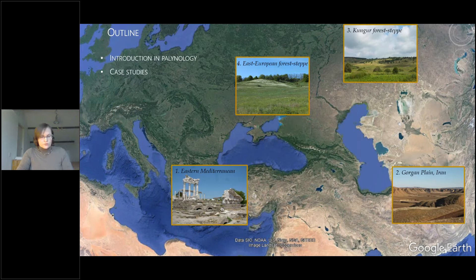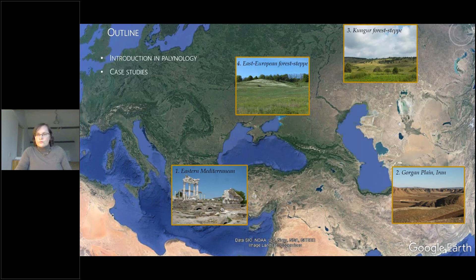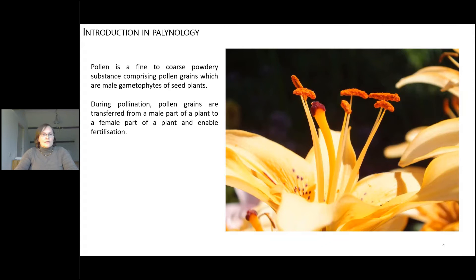In my talk, I would like first to give an introduction to palynology as a tool for reconstruction of vegetation changes, and then we will go to case studies. I will present four case studies: first, Eastern Mediterranean, with results from Elaia and Ainos; then the Gorgon Plain and the Sasanian Empire; then Kungur Forest Steppe, where Monica and I will present our project; and finally, East European Forest Steppe, where Katerina will share the first results.